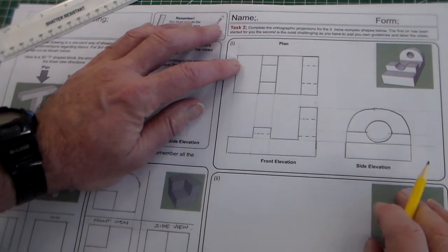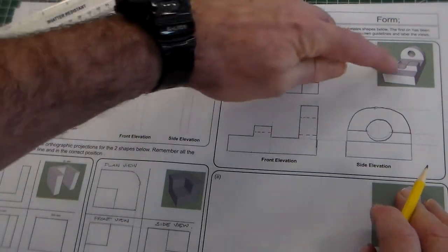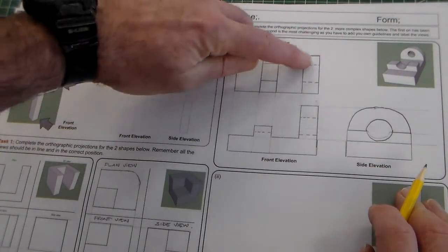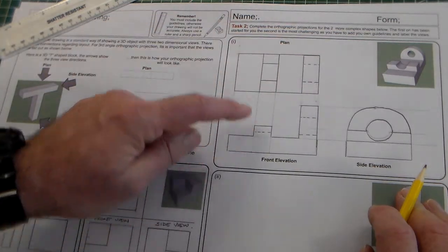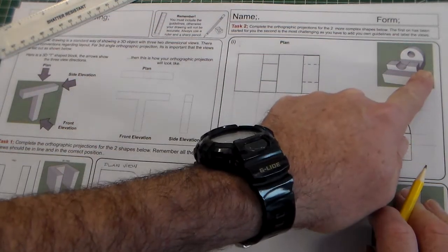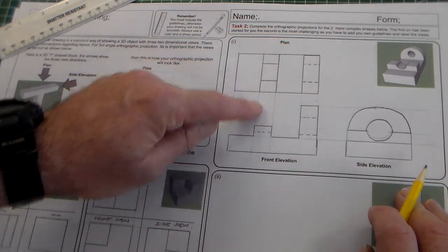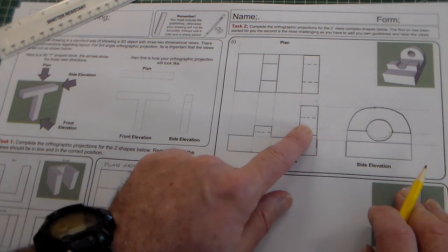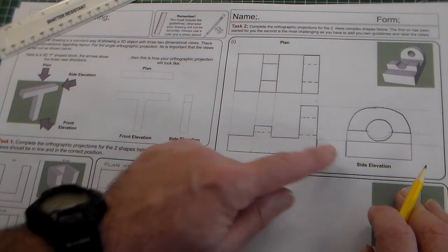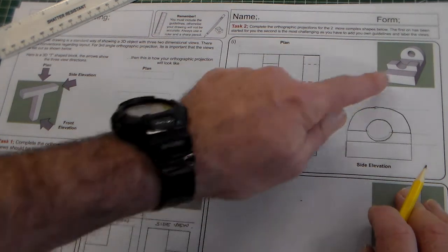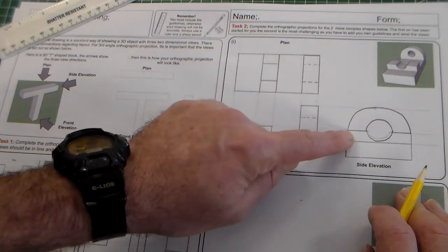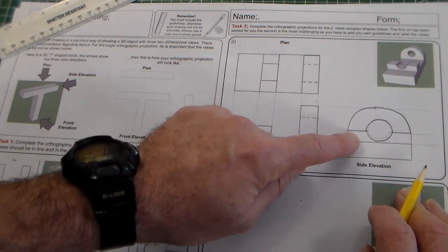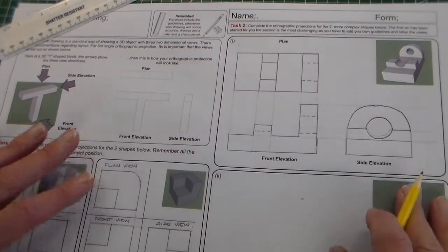We've got our plan view with the cut out there and the hole in hidden detail. Here from the front elevation which we've taken as this view here, I have hidden detail here and hidden detail here for the hole and the cut out. And then the side elevation which we've taken from this end is there with the hole right through and the cut out showing.